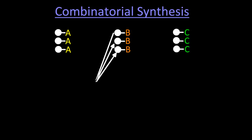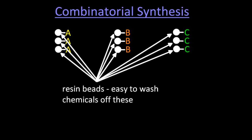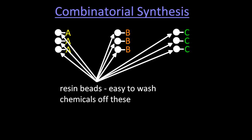So combinatorial synthesis, the small beads, in fact they're resin beads, this is what's called solid state chemistry, where you put the chemicals on little beads, do the chemistry, and then you can wash them off easily afterwards.